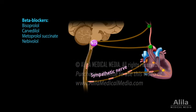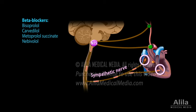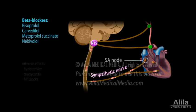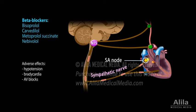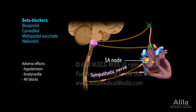Beta-blockers decrease heart rate by binding to beta-1 adrenergic receptors in the heart and blocking the sympathetic influences that act through these receptors. Common side effects are those of hypotension. Rarer but more severe adverse events include bradycardia and AV blocks.